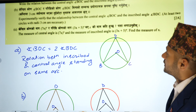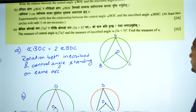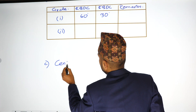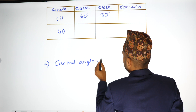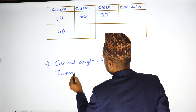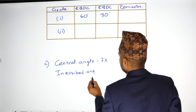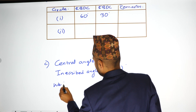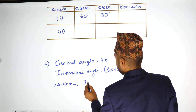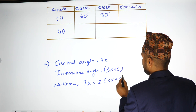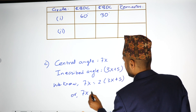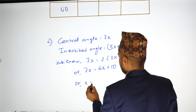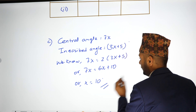Third question: the measure of the central angle is 7x and the measure of the inscribed angle is 3x plus 5. Find the value of x. Since the central angle is double the inscribed angle: 7x = 2(3x + 5), which gives 7x = 6x + 10, so x equals 10 degrees.